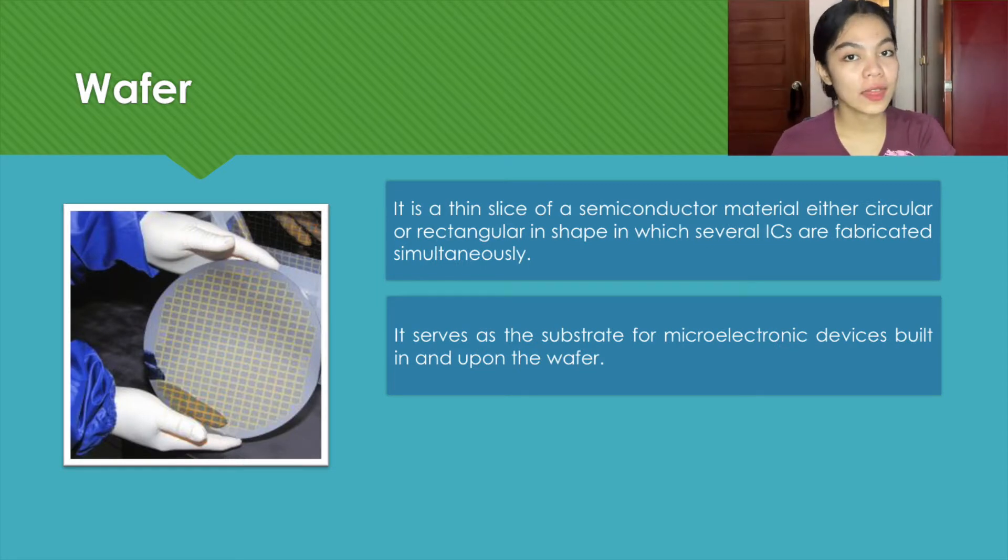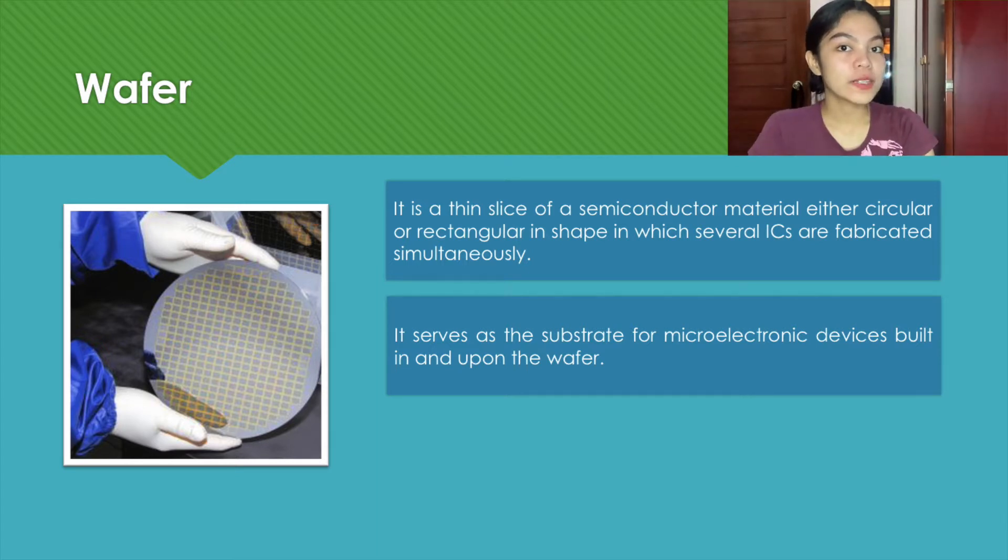The next term is a wafer. A wafer is a thin slice of semiconductor material, either circular or rectangular in shape, on which several ICs are fabricated simultaneously. It serves as the substrate for microelectronic devices built in or upon the wafer.